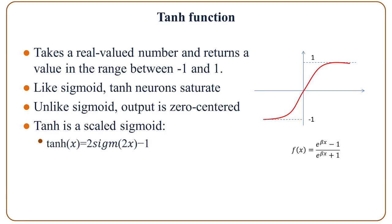The second is the tanh function. The tanh function takes a real-valued number and returns a value in the range between negative 1 and 1. Just like the sigmoid function, tanh neurons saturate. However, the output is 0-centered, and you can consider it a scaled sigmoid function.